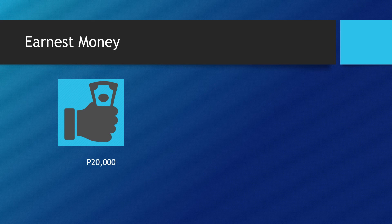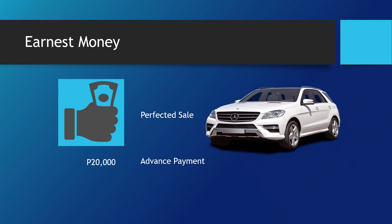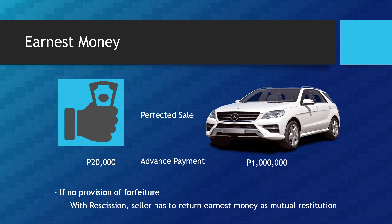Earnest money given by the buyer shall be considered as part of the price and as proof of the perfection of the contract. It constitutes an advance payment to be deducted from the total price. When there is no provision for forfeiture of earnest money and the sale fails to materialize, then with the rescission, it becomes incumbent upon the seller to return the earnest money as a legal consequence of mutual restitution. Where parties merely exchanged offers and counter offers, there being no perfection of a contract of sale yet, money given as deposit cannot be considered as earnest money since such term applies only to a perfected sale.